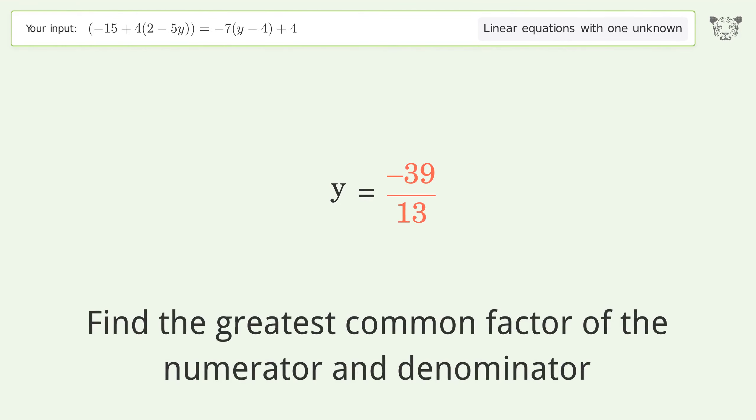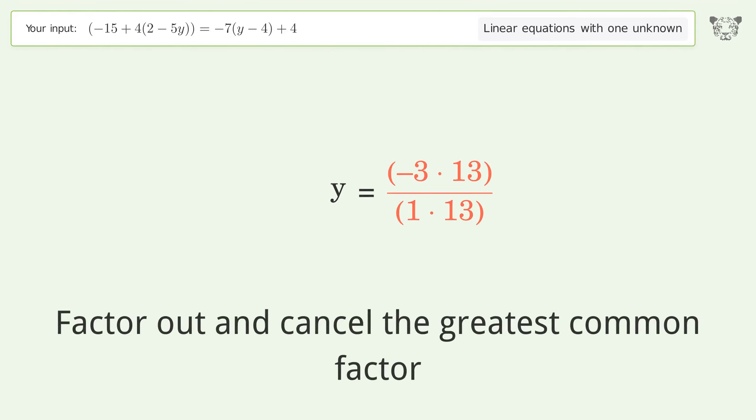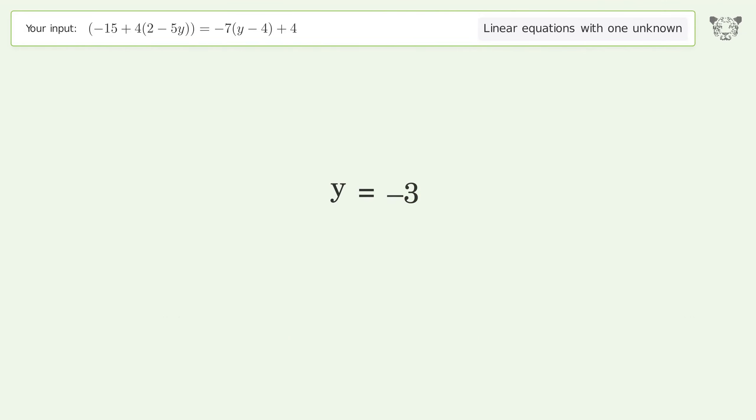Find the greatest common factor of the numerator and denominator. Factor out and cancel the greatest common factor. And so the final result is y equals negative 3.